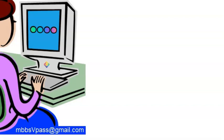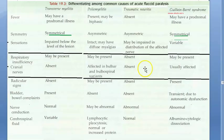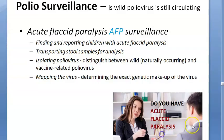Acute flaccid paralysis is very important for polio surveillance — that is why we learned all these causes and how to differentiate them. That is it for this video.